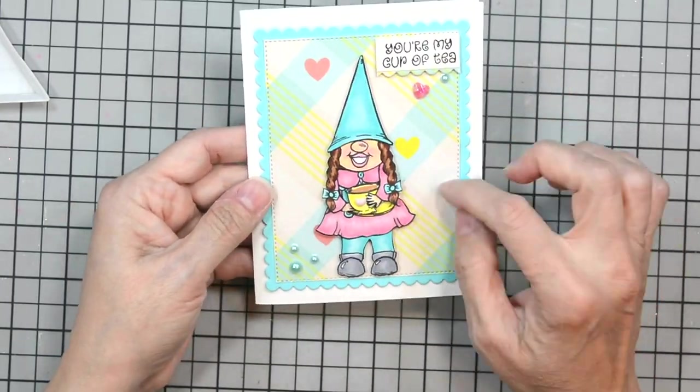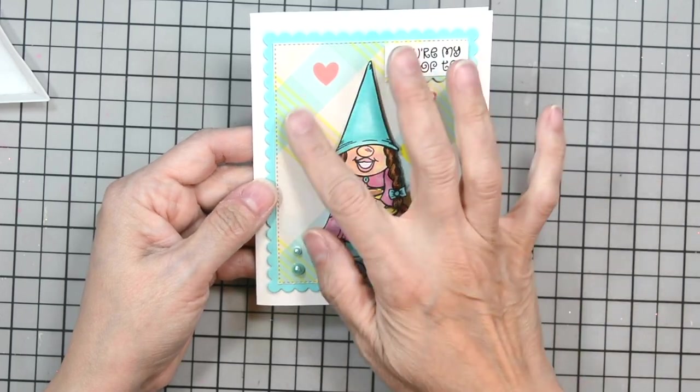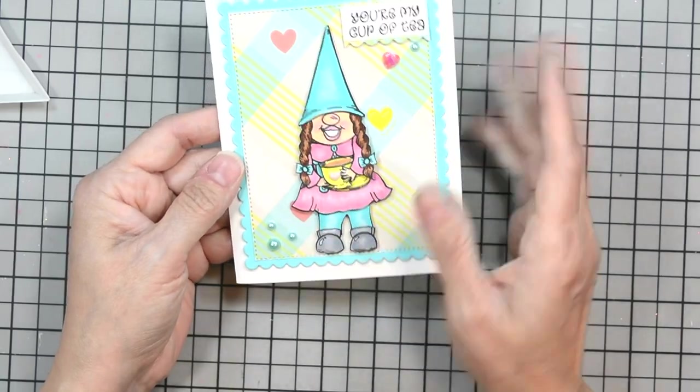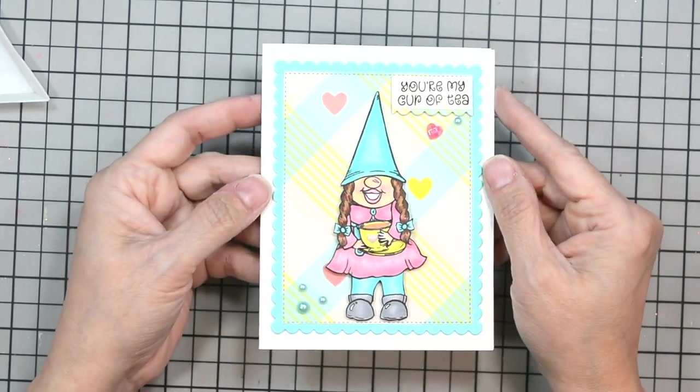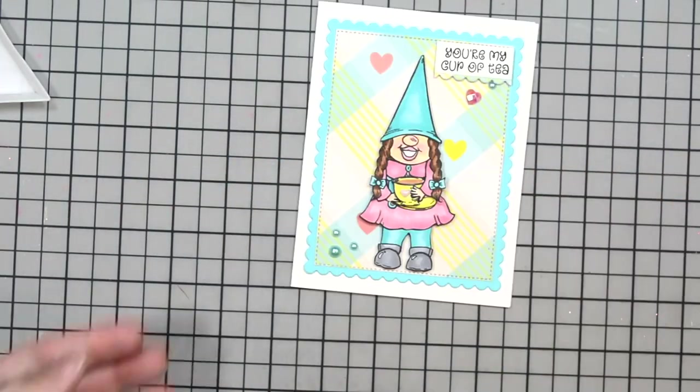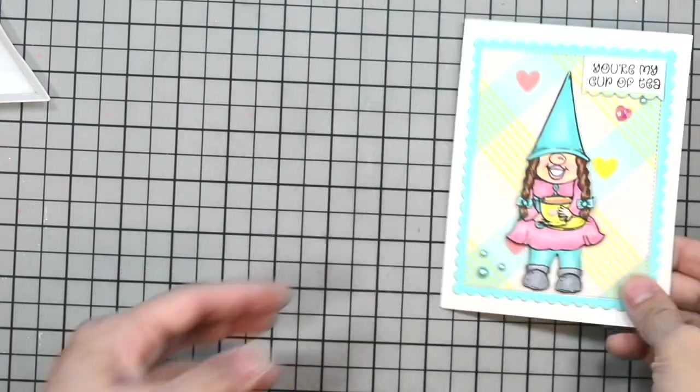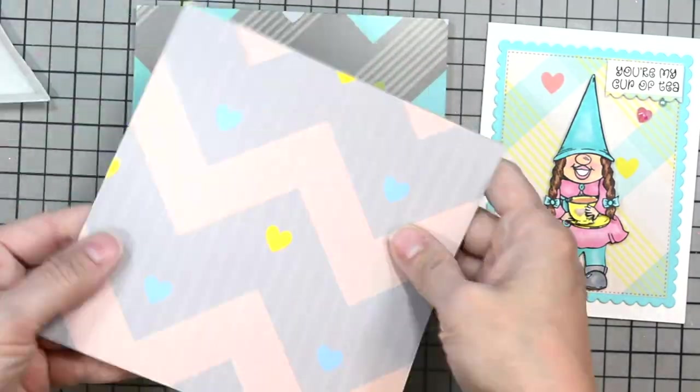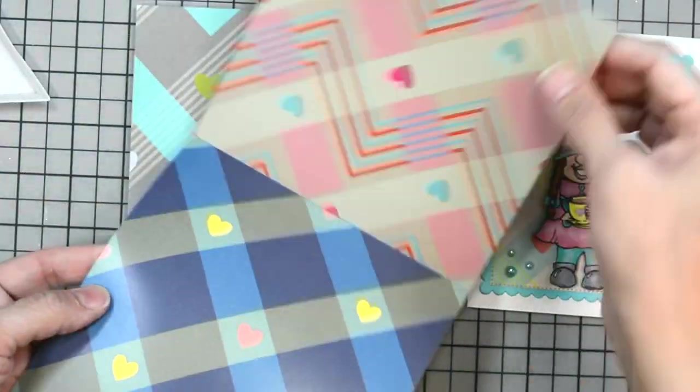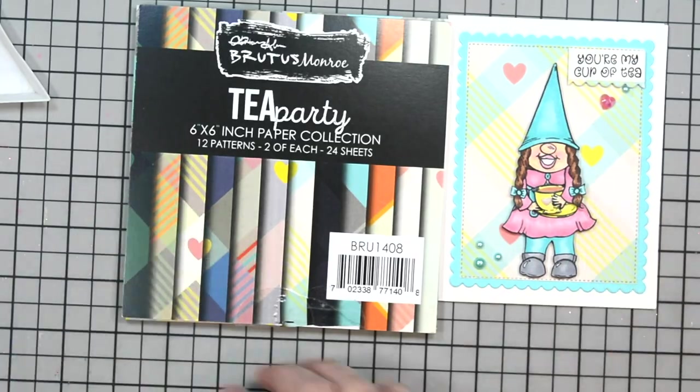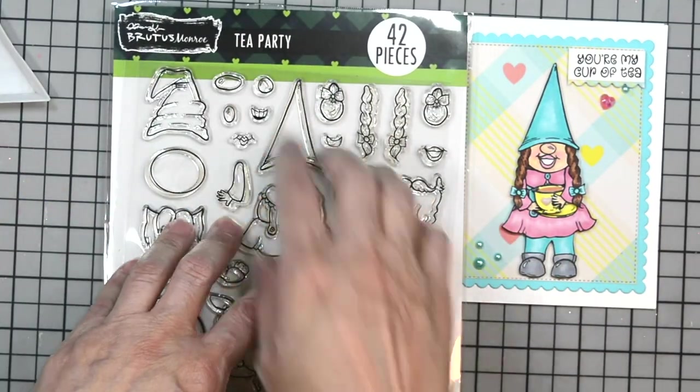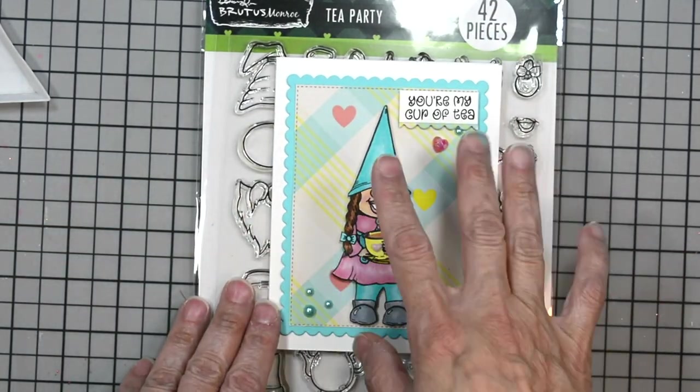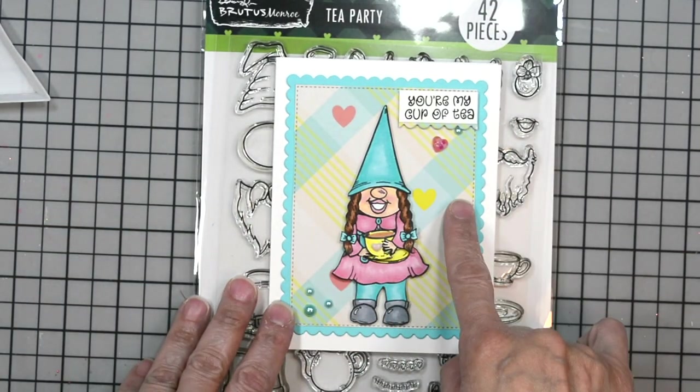Here's everything right there for our card and our little gnome. I did add little highlights with a gel pen on her shoes and her hat. You might see it in the stills. We used our Tea Party six by six paper collection for our background and the Tea Party stamp set—our gnome, our little teacup, and our sentiment for our card today.